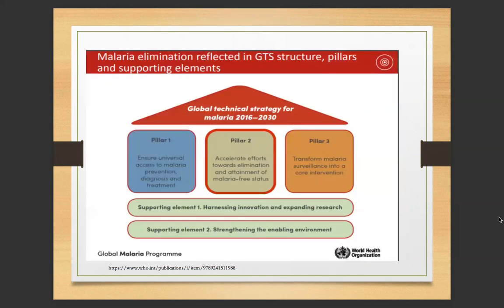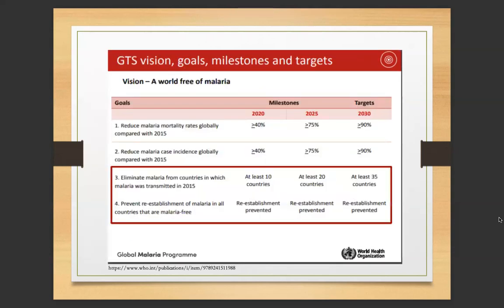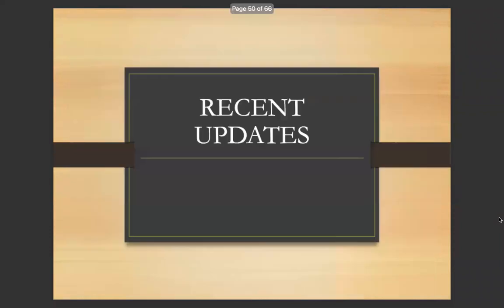The GTS structure has three pillars: first, ensure universal access to malaria prevention, diagnosis, and treatment; second, accelerate efforts towards elimination and attainment of malaria-free status; and third, transform malaria surveillance into a core intervention. Supporting elements include harnessing innovation and expanding research, and strengthening the enabling environment. GTS vision, goals, milestones, and targets show milestones by 2025 and 2030 with clear targets for elimination.